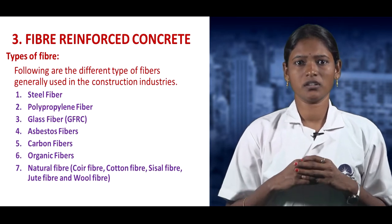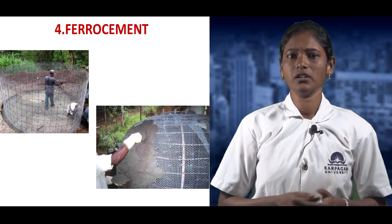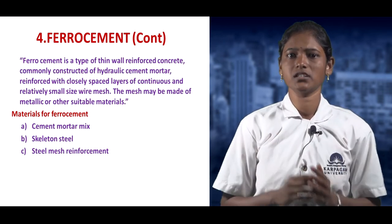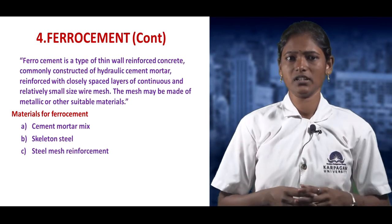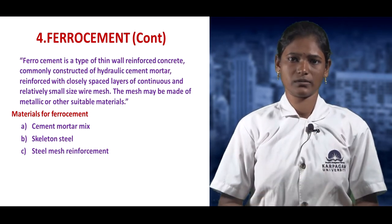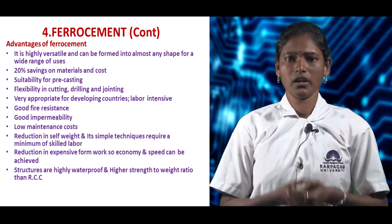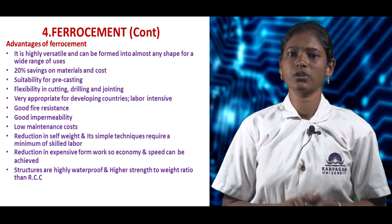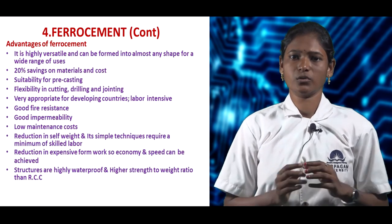Ferrocement is a thin-walled reinforced concrete structure consisting of hydrated cement mortar reinforced with closely spaced layers of continuous, relatively small wire mesh, also known as chicken mesh. It is made of metallic or other suitable materials. Materials used are cement mortar matrix and skeletal steel mesh reinforcement. Advantages include: highly versatile, can be formed in any shape, 20% cost saving, flexible in cutting, drilling and joining, good fire resistance, good impermeability, low maintenance cost, reduced labor cost, no formwork necessary, and high waterproof resistance.